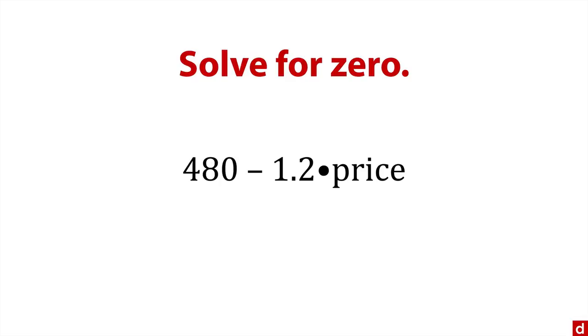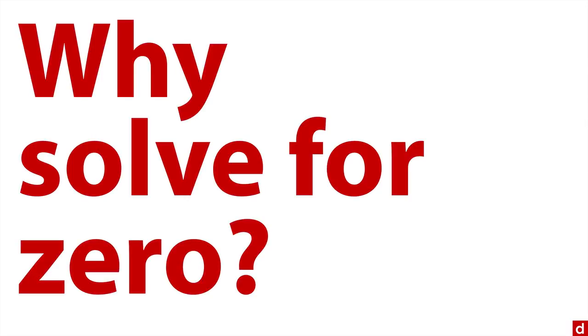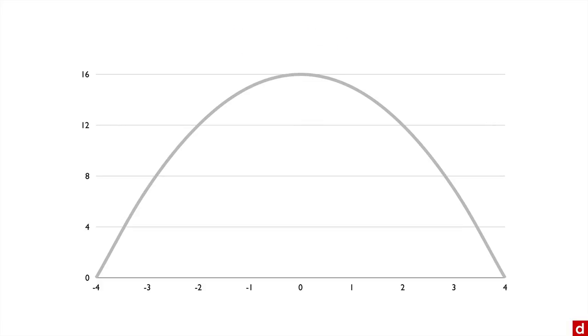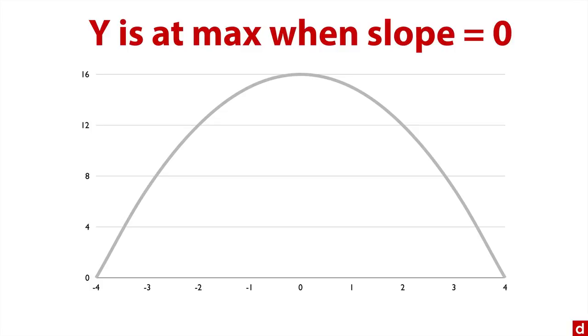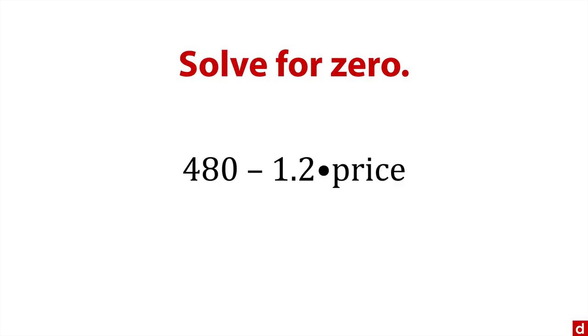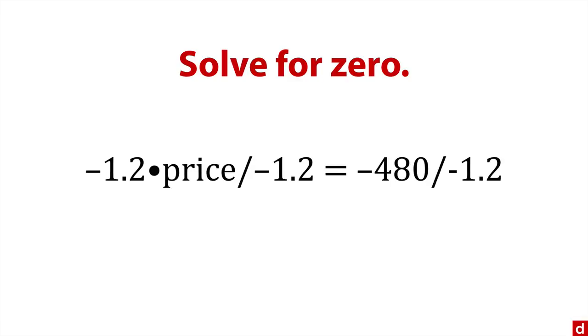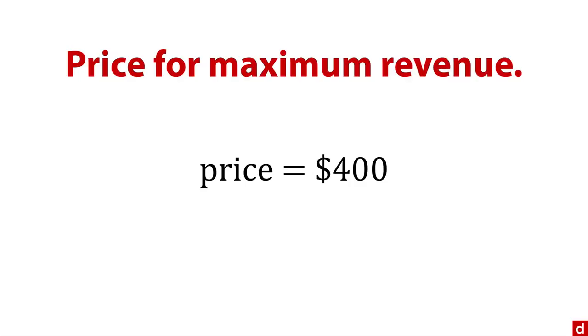In case you're wondering why we solve it for zero, that gives us the place when y is at a maximum. We had a minus squared, so we invert the shape. We're looking for this value right here when it's at the very tippy top of the curve, because that will indicate maximum revenue. We solve for zero. We subtract 480 from each side, and divide by minus 1.2 on each side. This is our price for maximum revenue. We've been charging $500 a week, but this says we'll have more total income if we charge $400 instead.